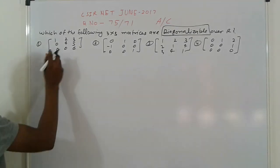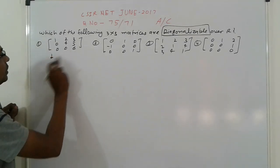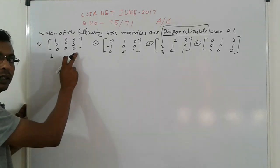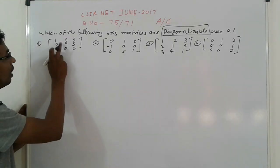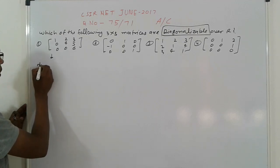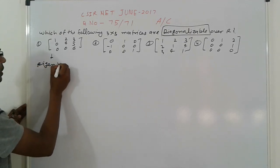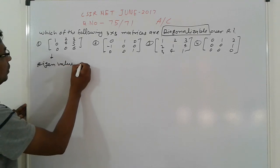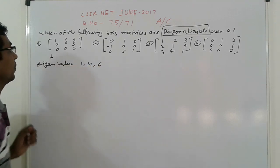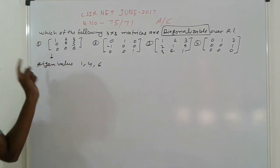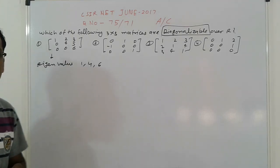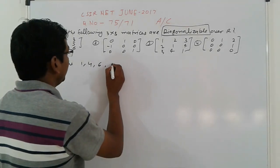First, what is the eigenvalue? This is an upper triangular matrix, and all diagonal elements are the eigenvalues. What are the eigenvalues? One, four, six. For an upper triangular matrix, the eigenvalues are the diagonal elements, which are distinct.